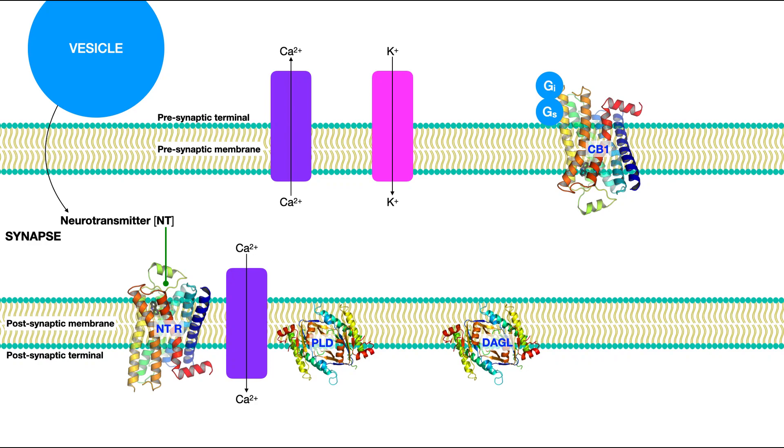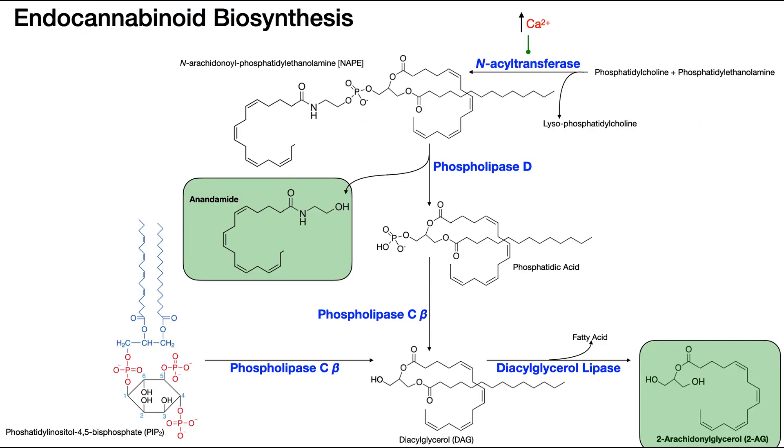In this video, we're going to talk about the mechanism of action of the endocannabinoids. In the previous video, we talked about their biosynthesis, and we saw that they're actually both made from specific phospholipids in the plasma membrane.